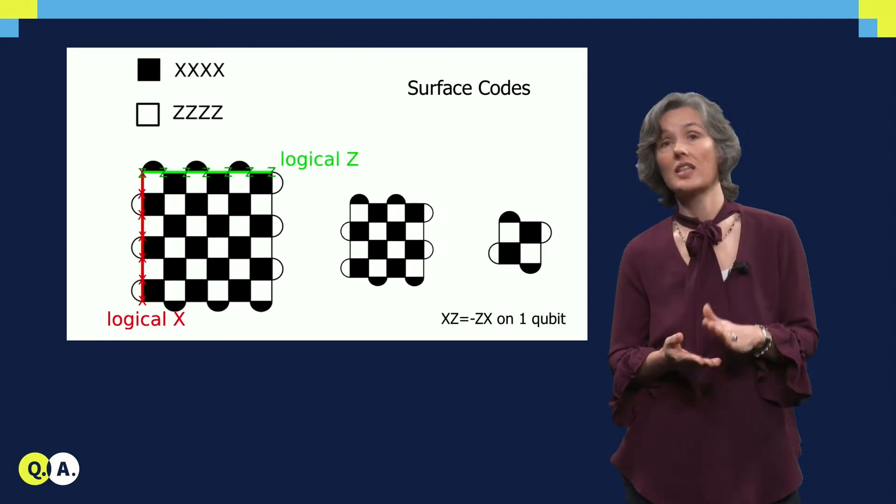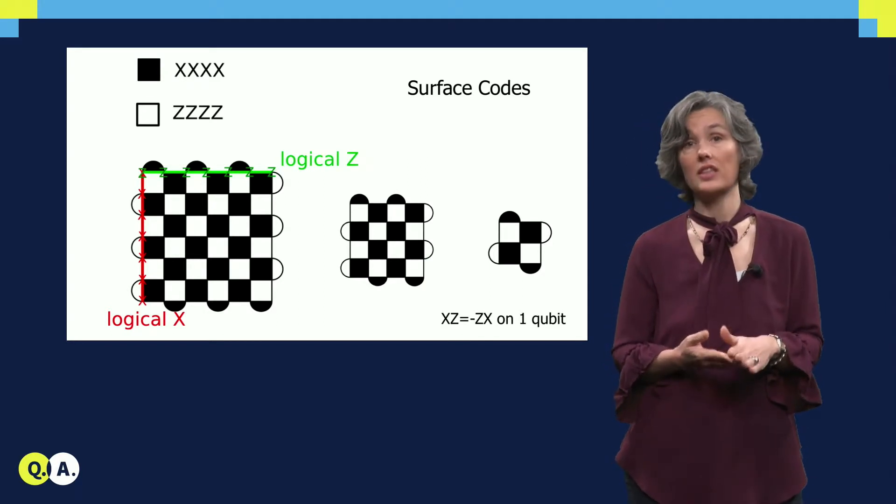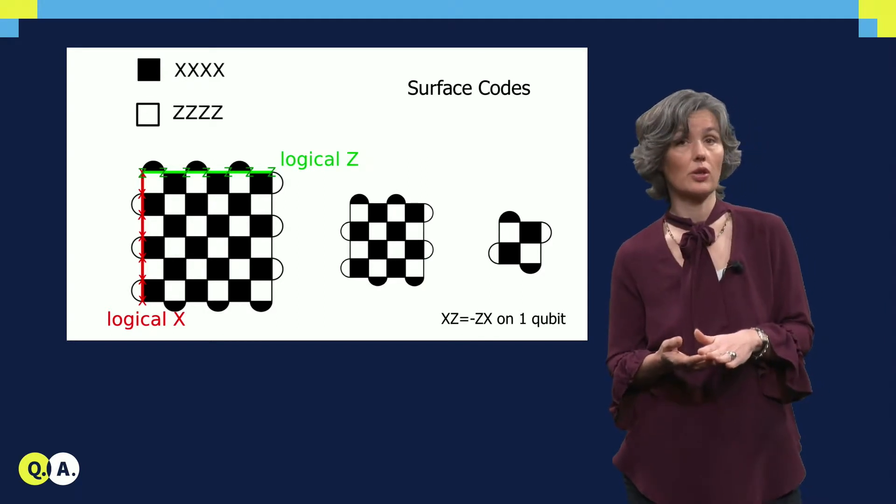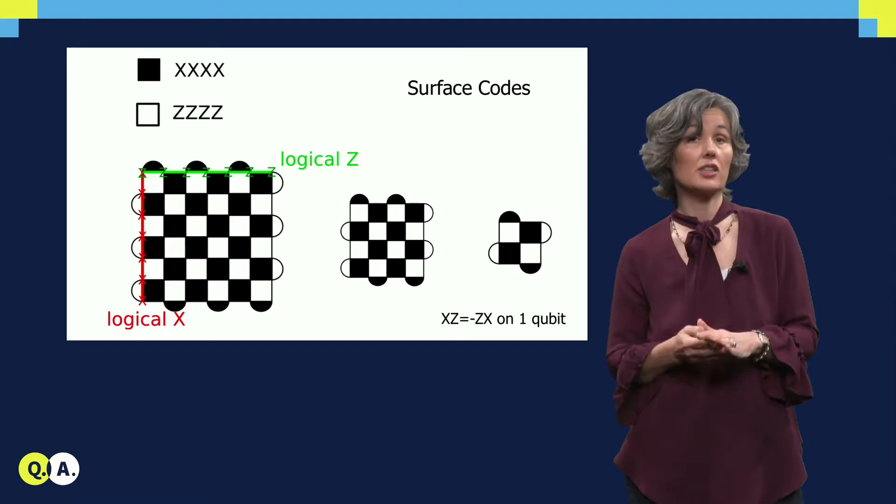So let us now take a deeper look at the surface codes. Shown on the very left is the distance 7 surface code with 49 qubits. There is a qubit on each lattice site, it is not drawn.